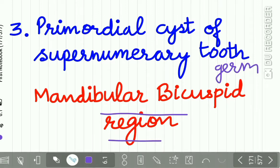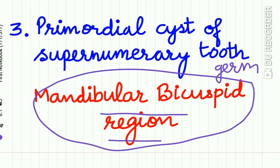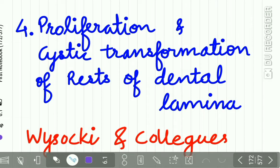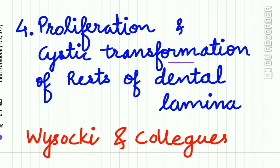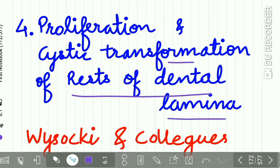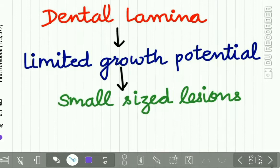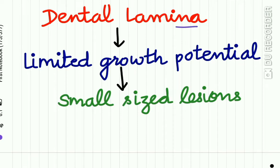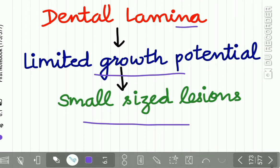So lateral periodontal cyst occurs predominantly in this region. The fourth and most appropriate theory, given by Wysocki and his colleagues, is that the lateral periodontal cyst occurs due to proliferation and cystic transformation of the rests of the dental lamina. In its post-functional state — when the proper functioning of the dental lamina is completed — the remnants of the dental lamina undergo proliferation and cystic degeneration. These dental lamina rests have a limited growth potential, so the size of these lesions is small.